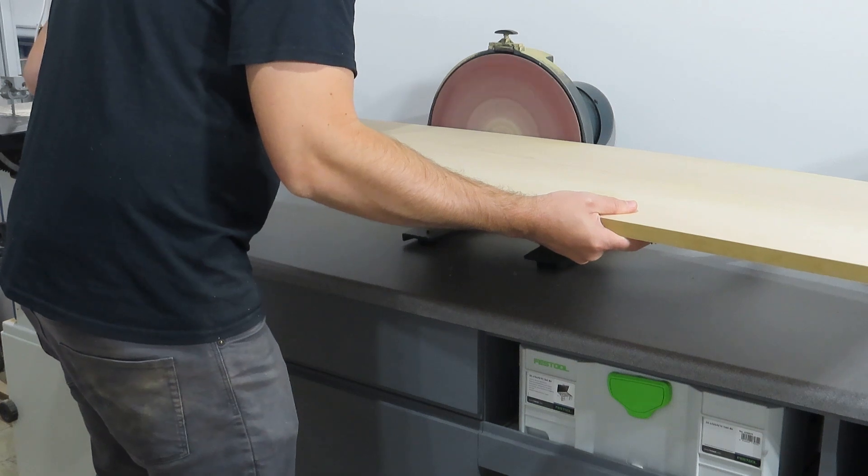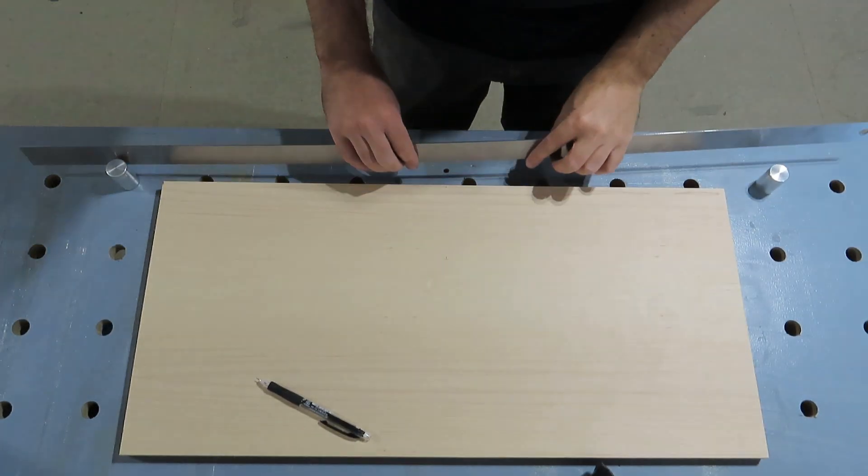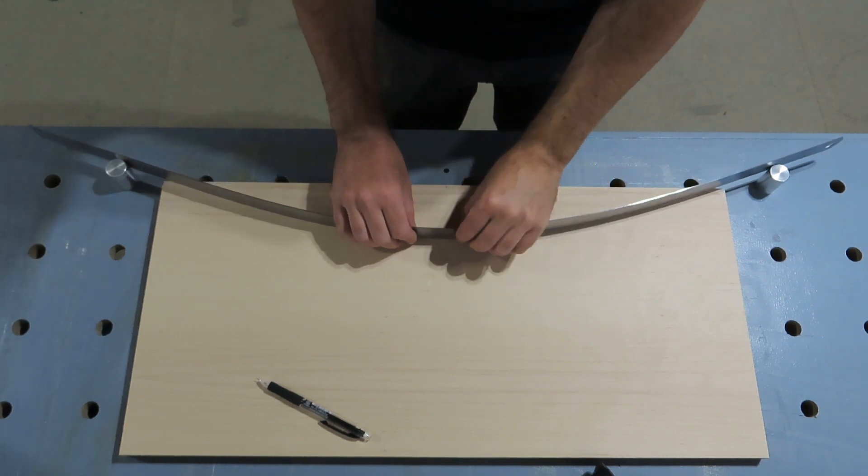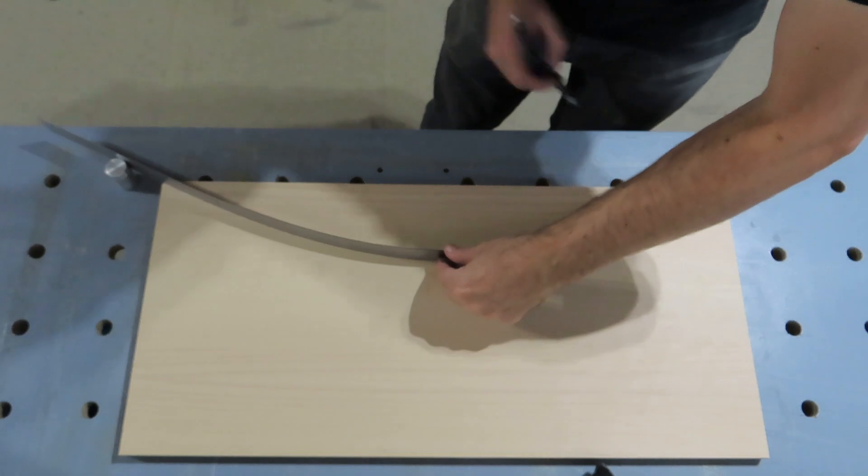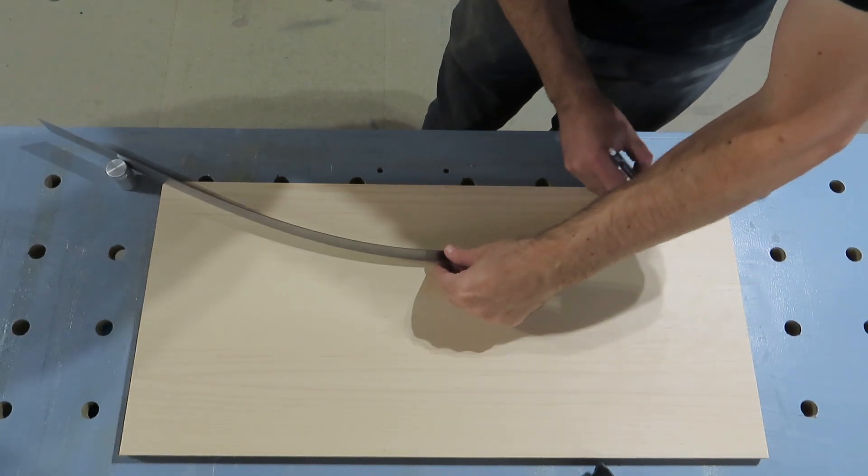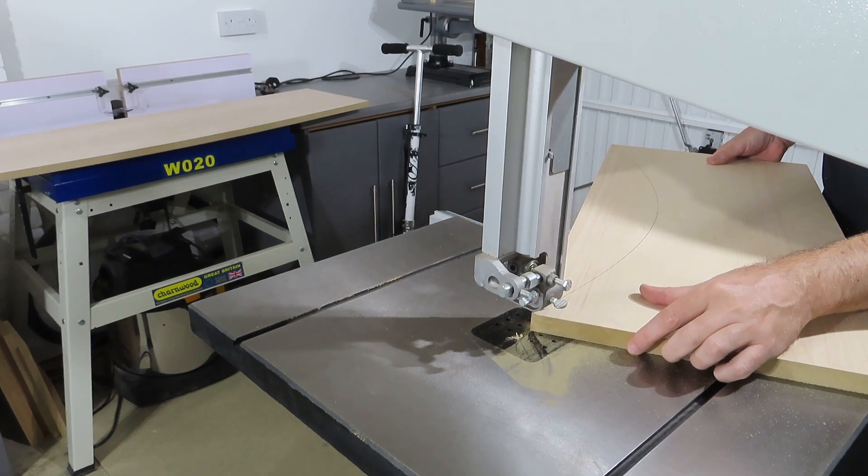All the curves for the pieces are done pretty much the same way. I just find something that bends, use that to mark a line, cut it out on the bandsaw, and then fine-tune the curve with either the disc sander or bobbin sander.